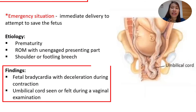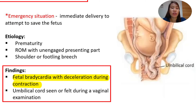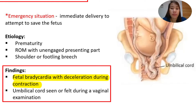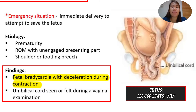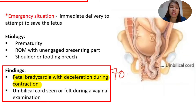What are the findings we can see if this occurs in a pregnant woman? First, we have fetal bradycardia with deceleration during contractions. 'Cardia' means heart, so that is the heart rate. When you see the prefix 'brady,' it means slow. The normal heart rate of a fetus is 120 to 160 beats per minute. If you auscultate and hear only 70 beats per minute, you already call that fetal bradycardia.